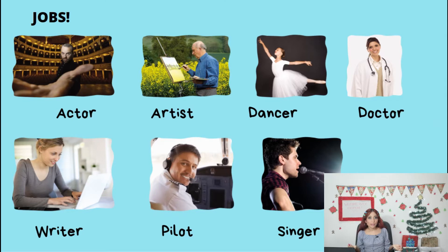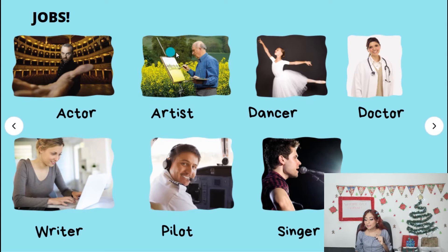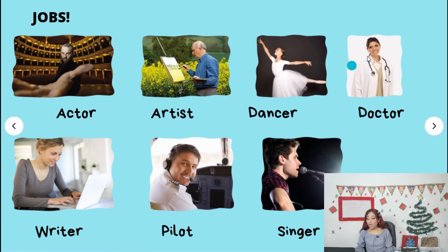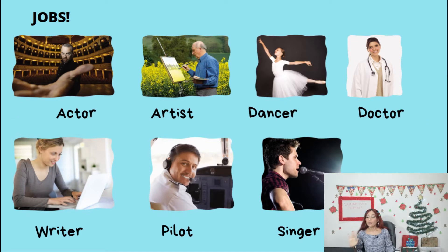The actors and the actresses are the people that appear in the movies and in the TV shows. Actor — very good. Artist — very good. Dancer — there are different kinds of dancers, but this is a ballet dancer. Doctor — very good, it's one of the most common jobs.